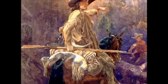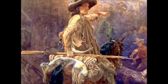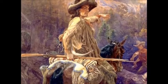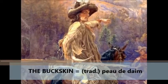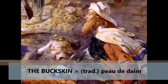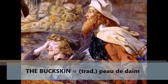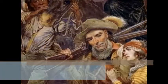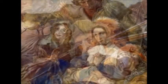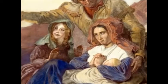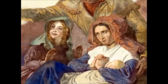The figures represent American types: the frontiersman with his buckskin, farmers, ranchers of various kinds, pioneers with their heads bandaged. And then, of course, we've got this pioneer Madonna.